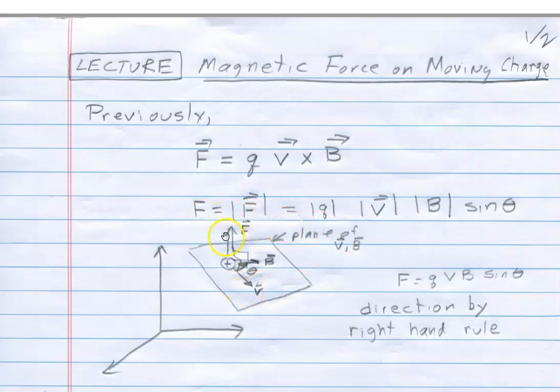And then the magnitude of the force is the magnitude of the charge times the magnitude of the velocity times the magnitude of the magnetic field times the sine of that angle. That gives you how strong the force is, but remember forces are vectors, and we have to give the direction.